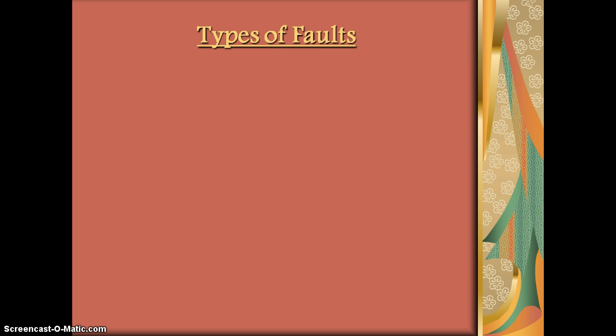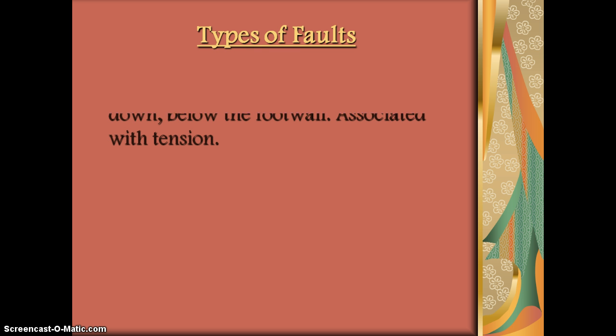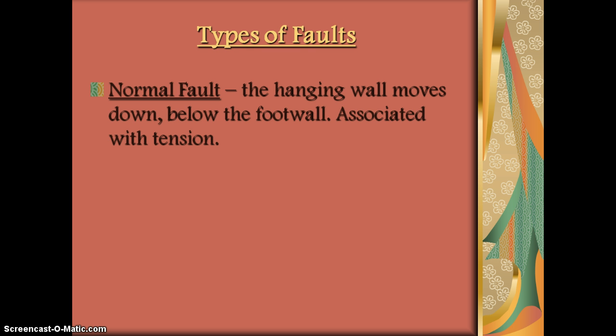Types of faults. There are three types of faults in the crust where earthquakes can occur. The first is called a normal fault. This is associated with tensional stress, which could be from divergent boundaries. As crust plates are being pulled apart, or spreading between two plates, tension can cause a normal fault to occur. In this case, the hanging wall will fall below the foot wall, and we'll see a diagram in a moment.